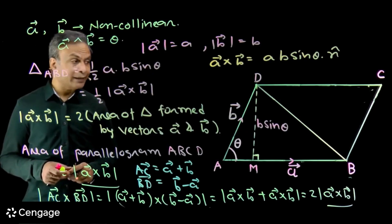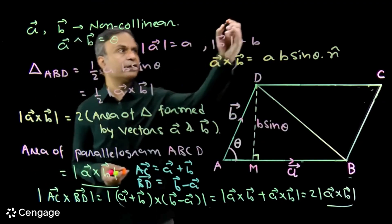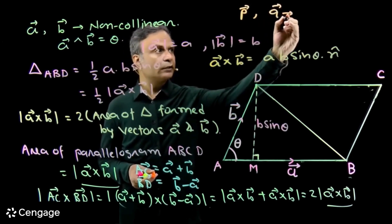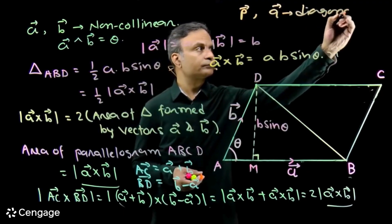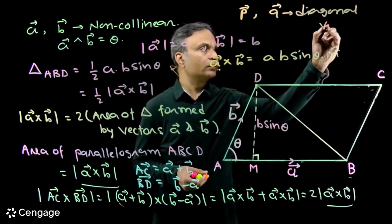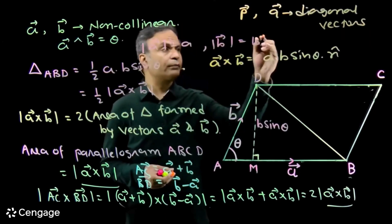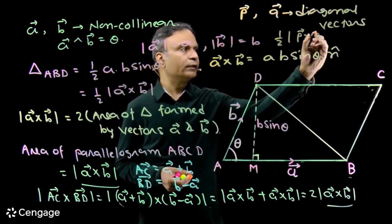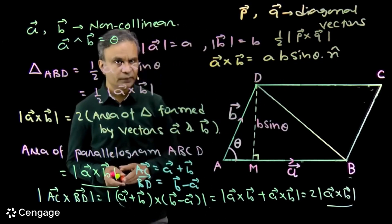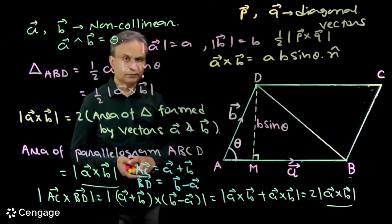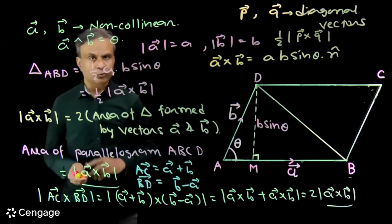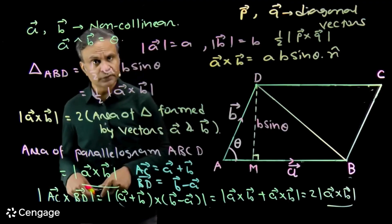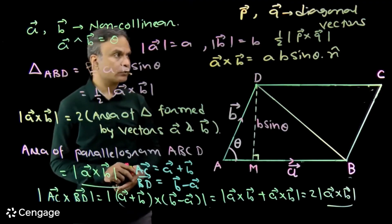So if the diagonal vectors of a parallelogram are given — suppose diagonal vectors of the parallelogram are P and Q — then the area of the parallelogram will be half of the modulus of P cross Q.